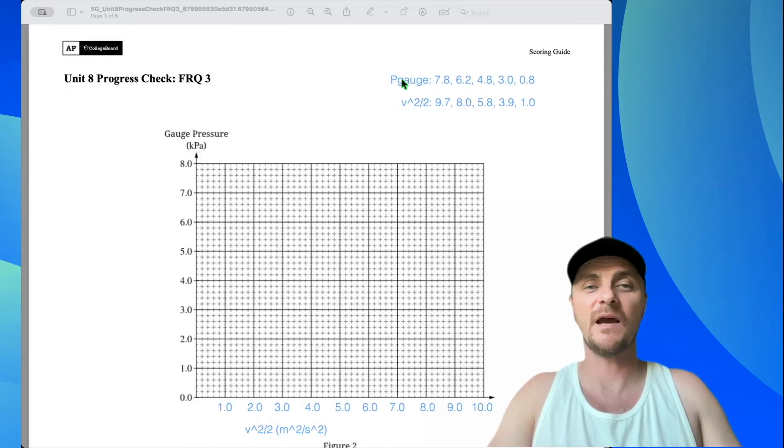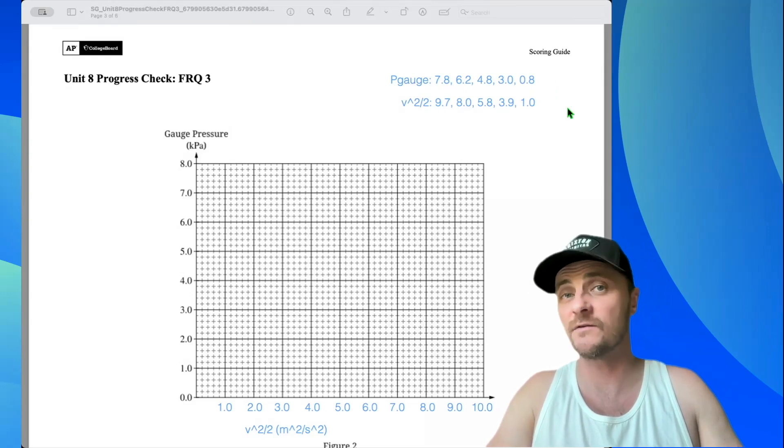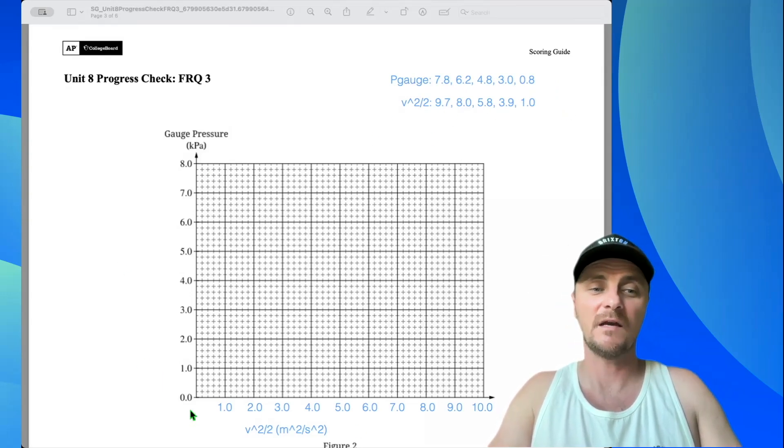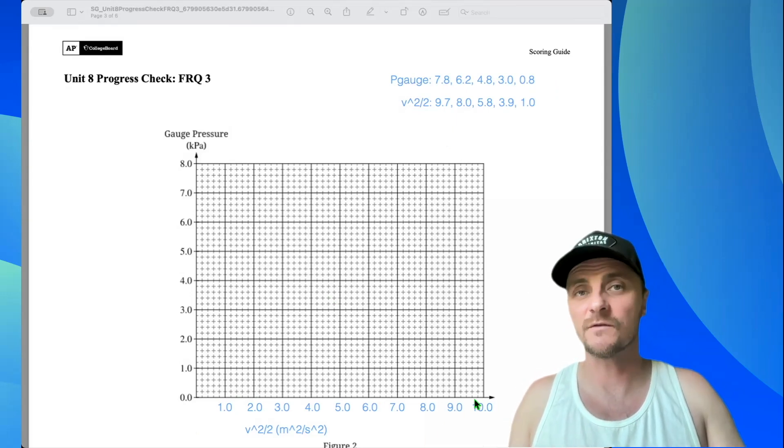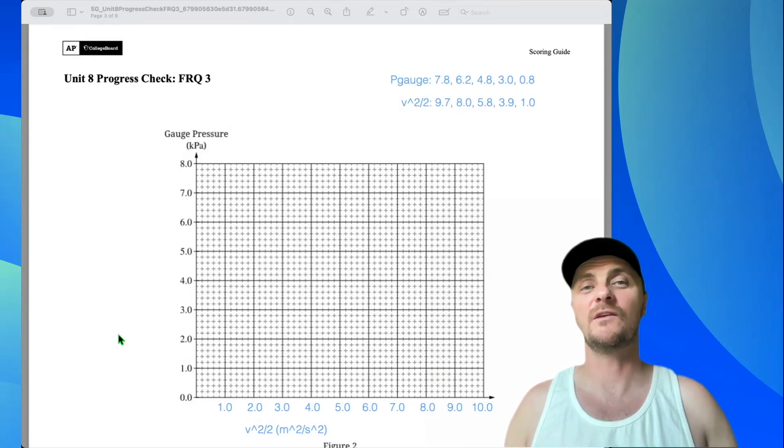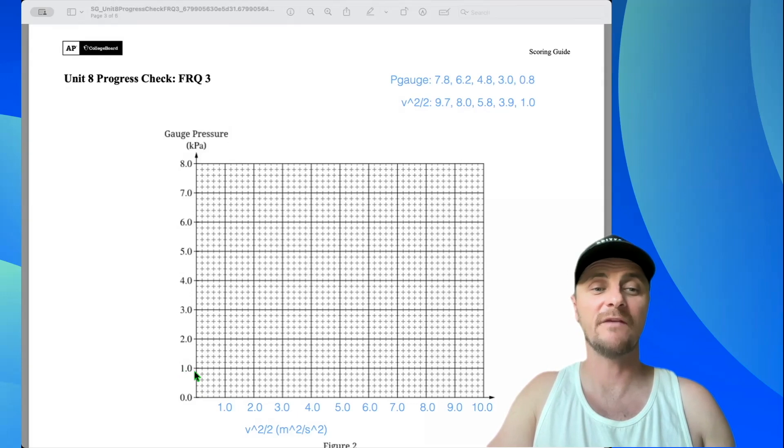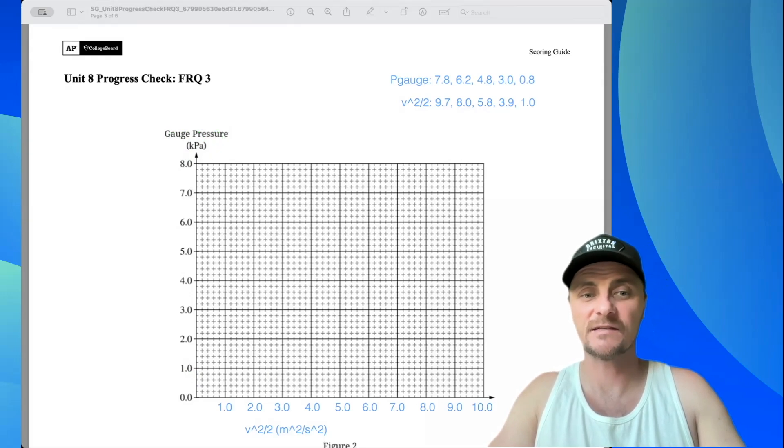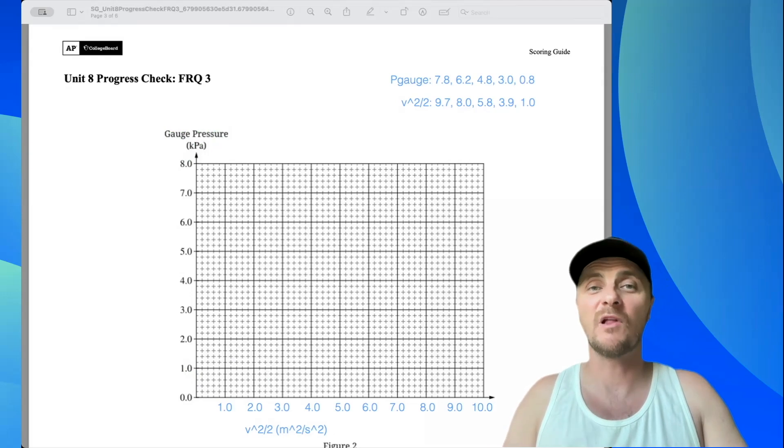For the sake of reference, we have all of our P gauge values right here. We have all our v squared over 2 values right here. I scaled the horizontal axis. My top value in the x-axis is 9.7, so we're going to divide that by 50 boxes, which gave me 0.194, which is very close to 0.2. That means each box is worth 0.2. Repeat that for the rest of the horizontal axis. For the y-axis, it uses the same scale. Every box is 0.2, resulting in every five boxes being a full 1. You need to label your axis with both quantity and unit. It's time to plot this data.